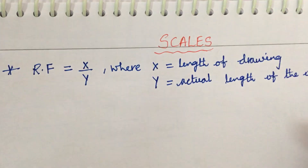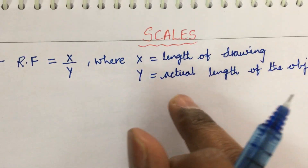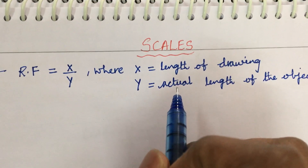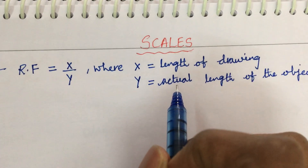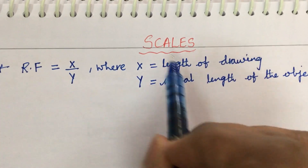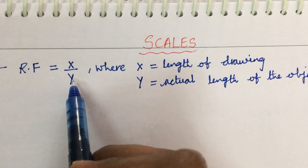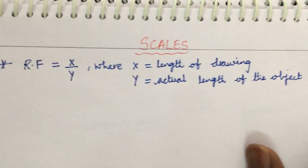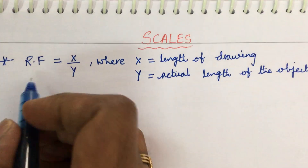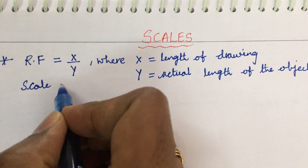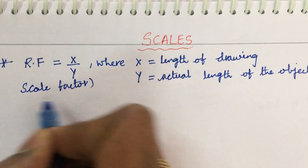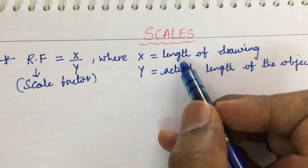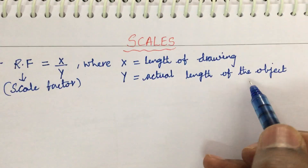For example, if the length of the object is 20 meters, which cannot be produced directly on the drawing sheet, you need to determine whether it is an enlarging scale, a reducing scale, or a full-size scale. Based on that, convert the RF into similar units and work out the length of the scale. The representation factor, also called the scale factor, is given as RF = x/y, where x is the length on the drawing and y is the actual length of the object.